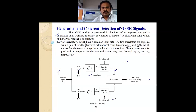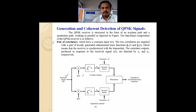Moving towards the detection of a QPSK signal. The detection scheme receives the QPSK signal, labelled X of T, and gives it to a pair of correlators. The correlators use basis functions φ1 of T and φ2 of T, and then the outputs are provided to decision devices which work on the even and odd combination of bits.